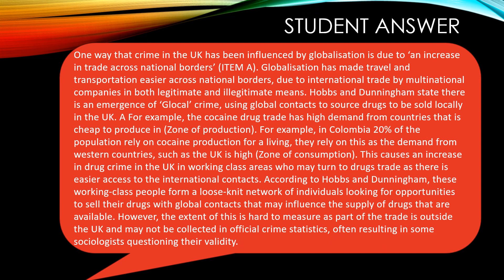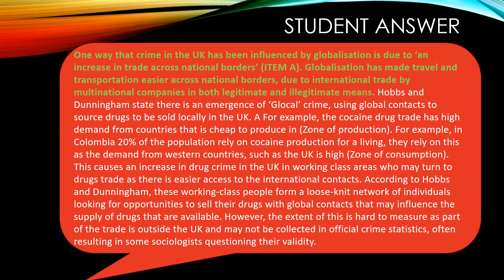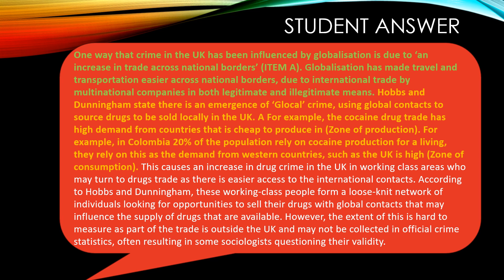Let's see how this student hits all the marks. They start clearly with developing the hook. The first way is due to an increase in trade across national borders — they clearly signpost it and develop the knowledge of what globalised trade across national borders actually is, referring to international trade with multinational companies involving both legitimate and illegitimate means. The student then links to Hobbs and Dunningham's research, discussing the emergence of local crime where the drugs trade has global connections but is locally based. They get some AO1 by comparing the zones of production in Colombia with the zones of consumption, which is the UK.